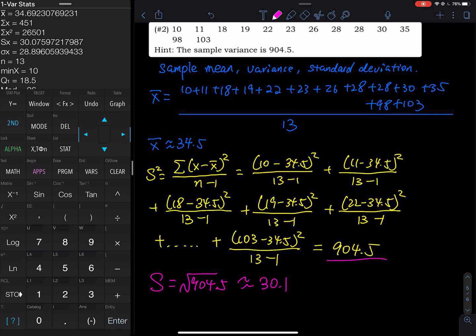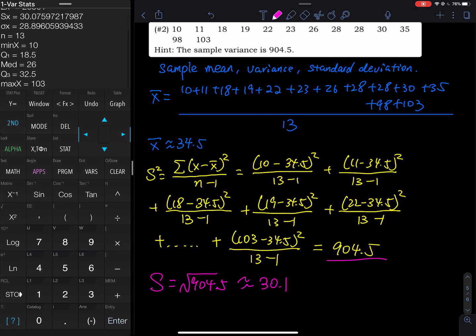You won't see the variance in here. So if you hit the down arrow to go down a few more steps, you will see minimum, Q1, median, Q3, maximum. We will talk about that in the next lesson. Where do I get the variance?